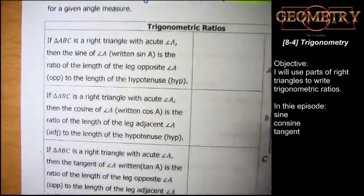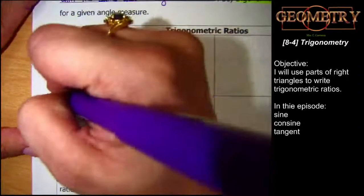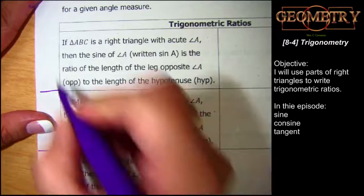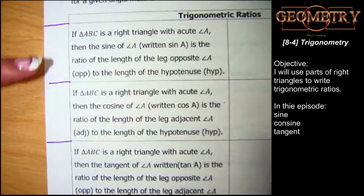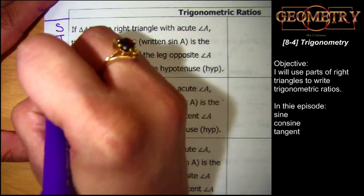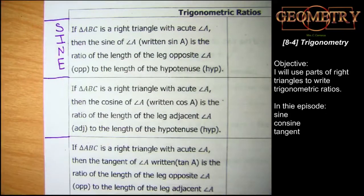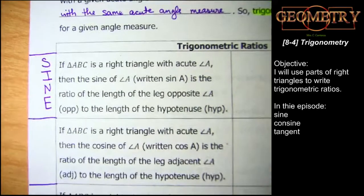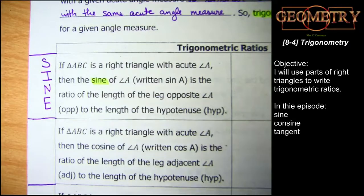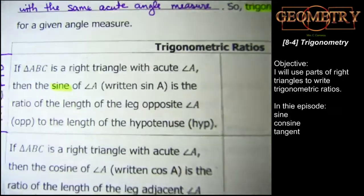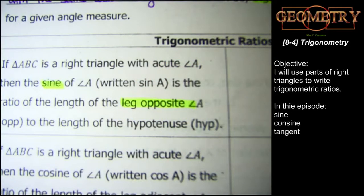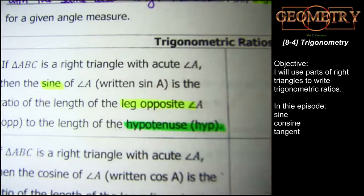So what is a trigonometric ratio? We have three main ones. The first is sine, spelled S-I-N-E. Sine is always going to be the leg opposite the angle we're looking at over the hypotenuse of the right triangle. Let me color-code the triangle so it's easier to track which side I'm talking about.